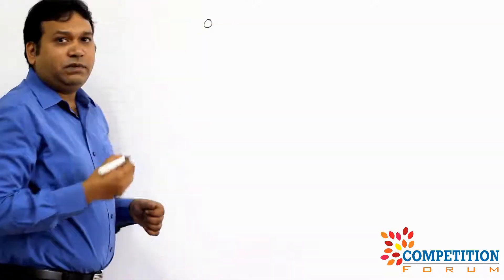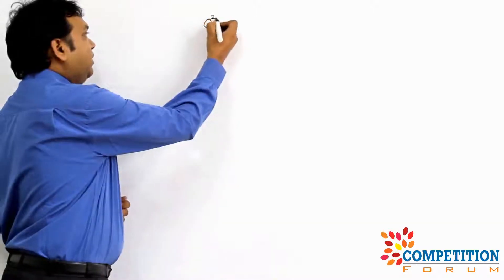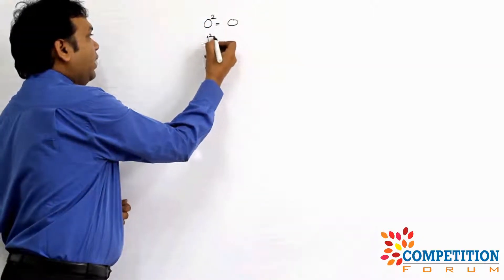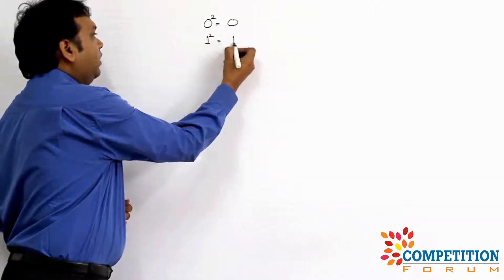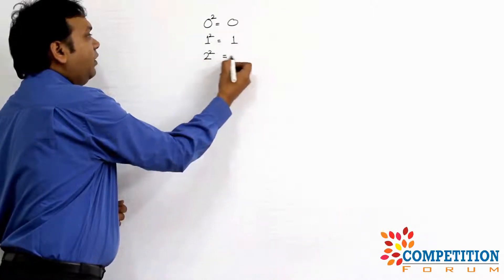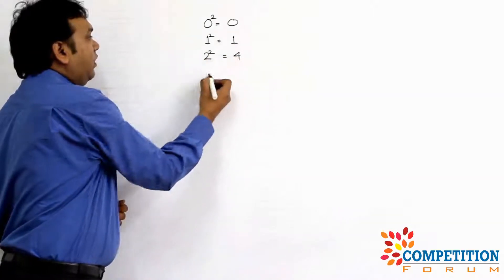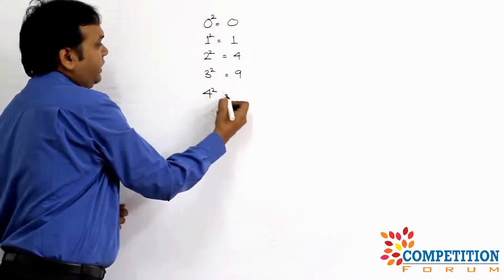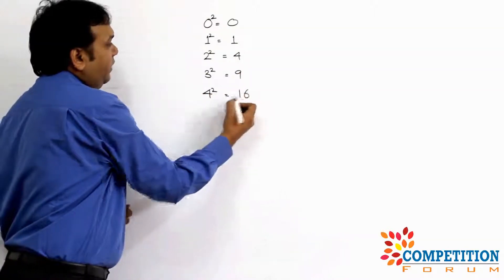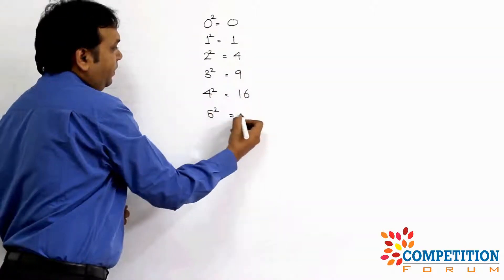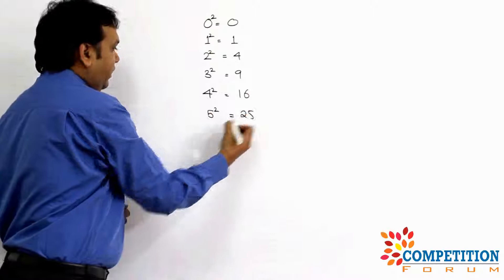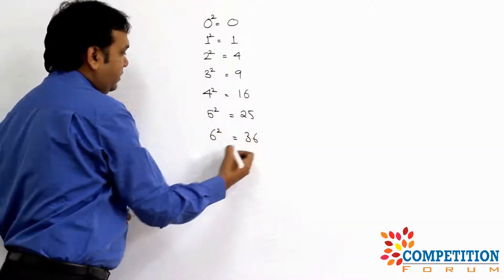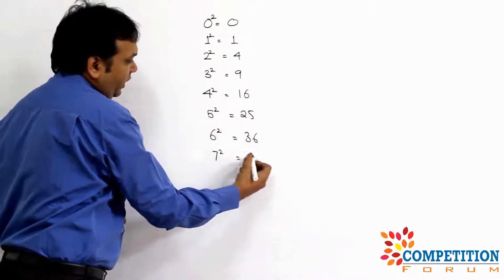Look at the squares of numbers from 0 to 9: 0² = 0, 1² = 1, 2² = 4, 3² = 9, 4² = 16, 5² = 25, 6² = 36, 7² = 49.